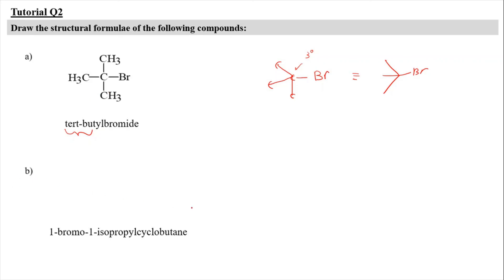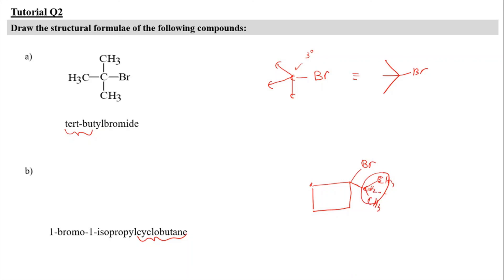For question 2B, we're going to draw 1-bromo-1-isopropylcyclobutane. The parent name is cyclobutane, so it's going to have four carbons in the cyclic compound — one, two, three, four. The carbon here is going to be attached with bromine and also attached with isopropyl. Isopropyl is going to have three carbons — one, two, and three. It is known as isopropyl because it has three carbons and is symmetrical, with one CH3 up and one CH3 downward. You can draw it this way, and you can also draw it as this expanded structure. Both of these are correct.